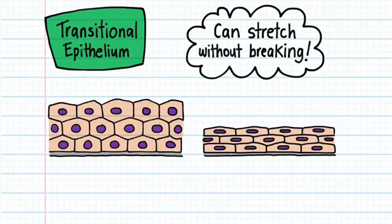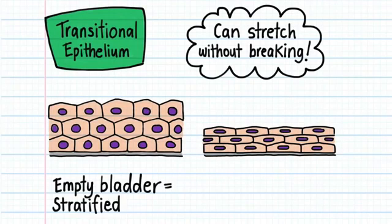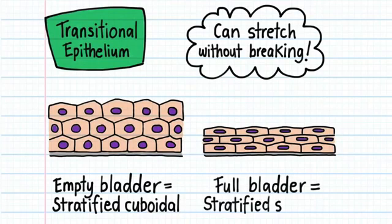Transitional epithelium is found in the bladder because the bladder has to stretch as it fills with urine. In an empty bladder, the cells are cuboidal in shape. But as the bladder fills with urine, the epithelial cells stretch and become squamous in shape. It's because the cells change shape that we call this epithelium transitional.